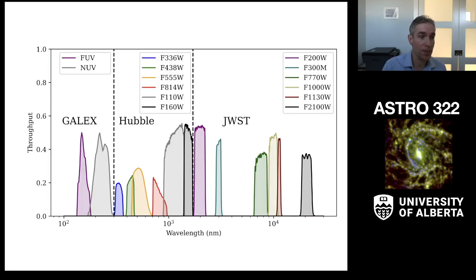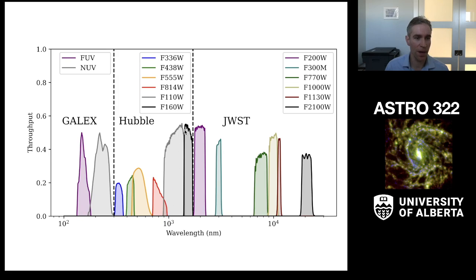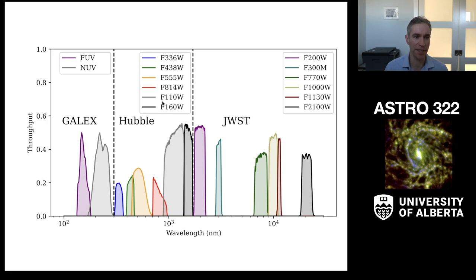Here are the same Hubble filters — F336, F438, F814. Hubble also has an infrared channel that gives you 1.1 and 1.6 micron light, shown as the gray and black curves here. Note this isn't 110 nanometers — this is 1.1 microns. Sending digits to space is very expensive, so they kept the notation fairly compact.